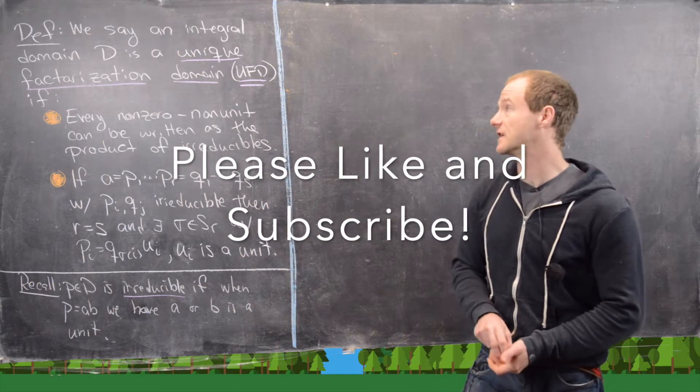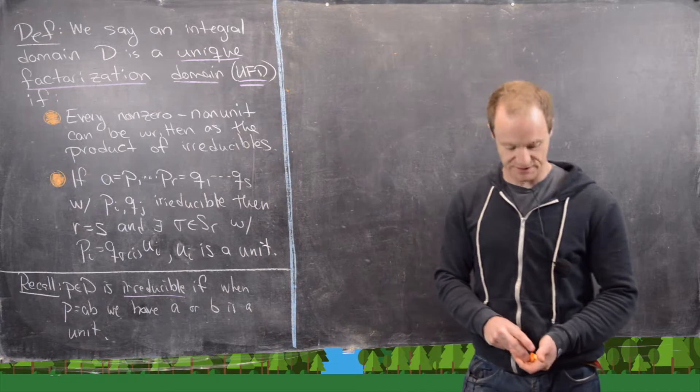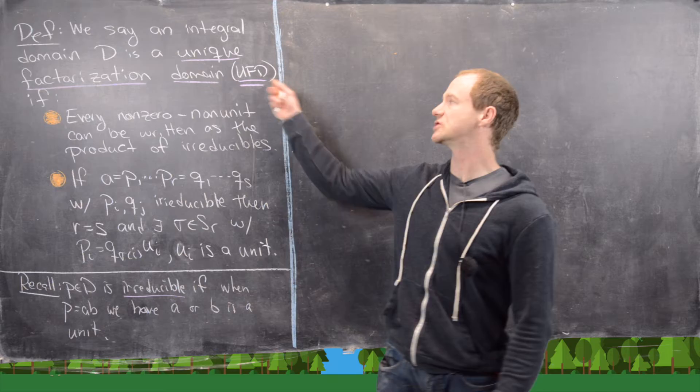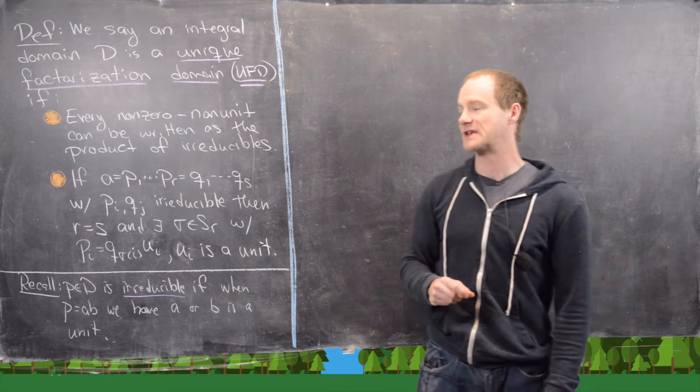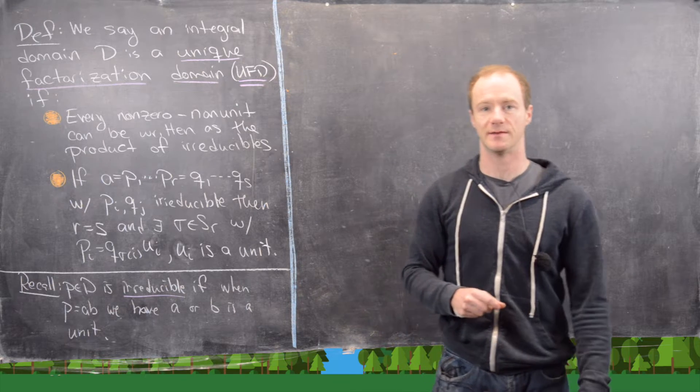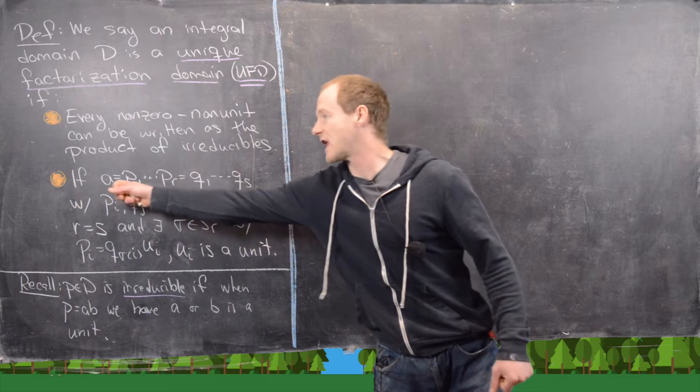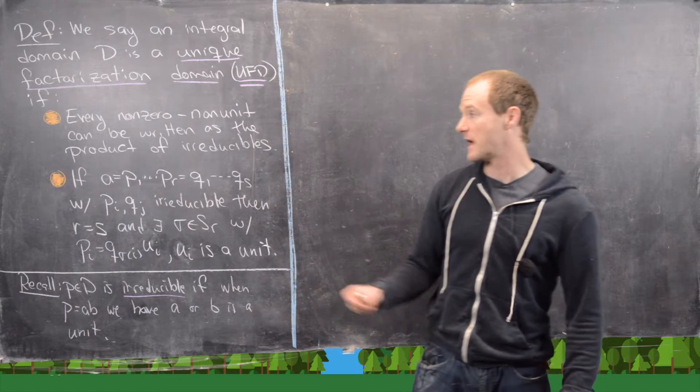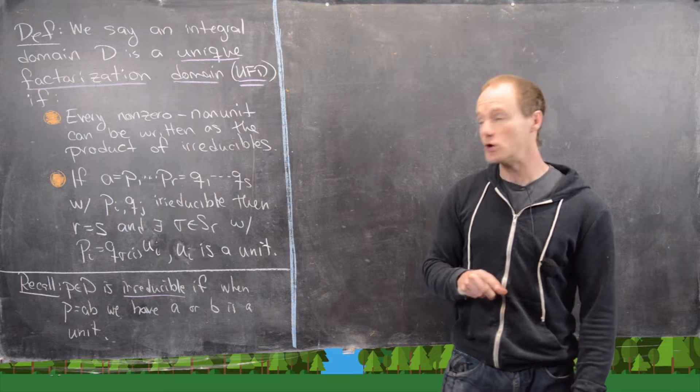So the definition goes like this. We say an integral domain D is a unique factorization domain, which we often shorten to UFD, if every non-zero non-unit can be written as the product of irreducible elements within the integral domain, and if we have an element A in the integral domain that can be written as the product of irreducible elements two different ways.